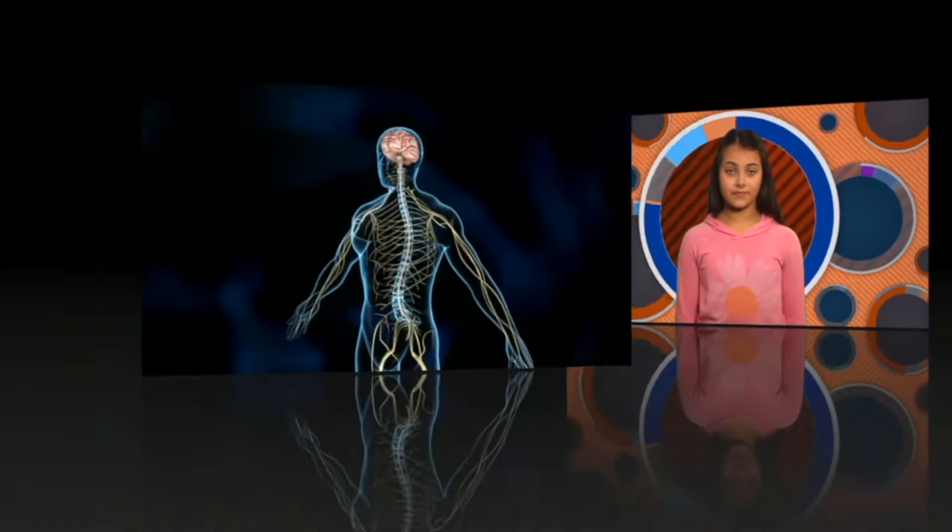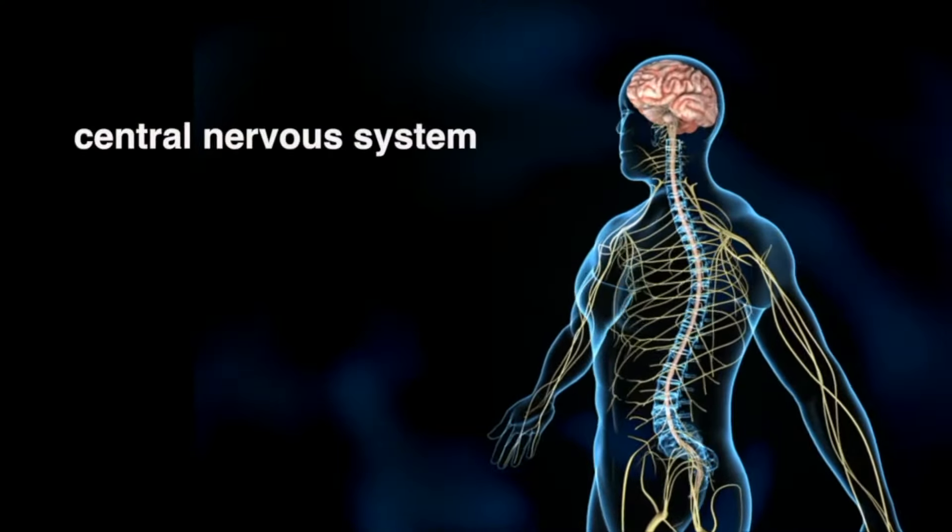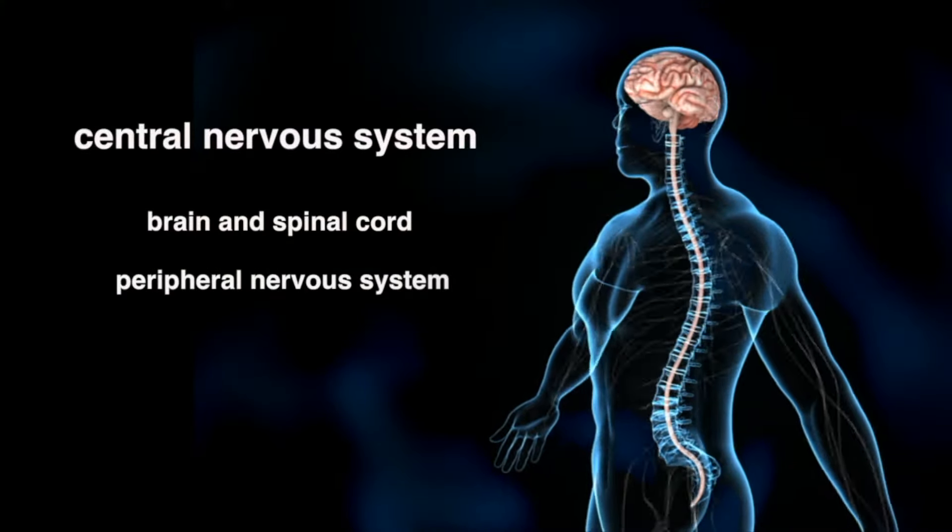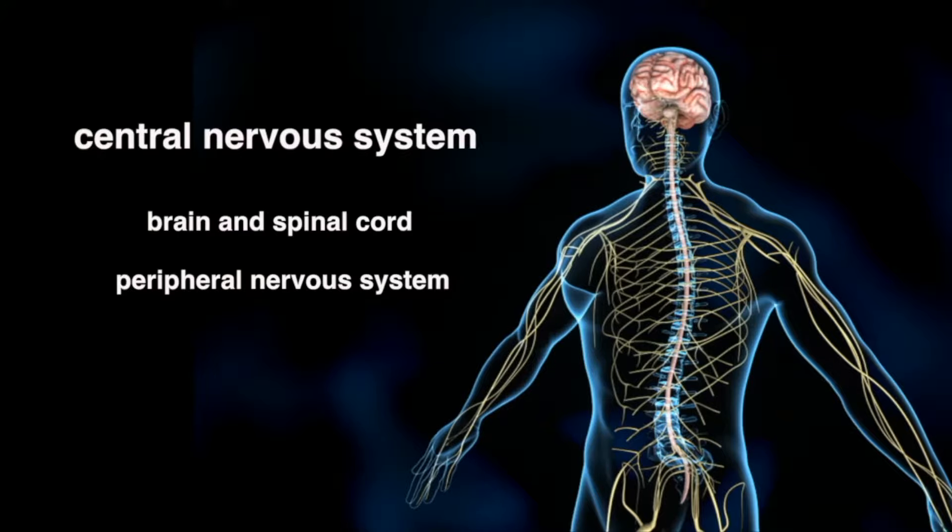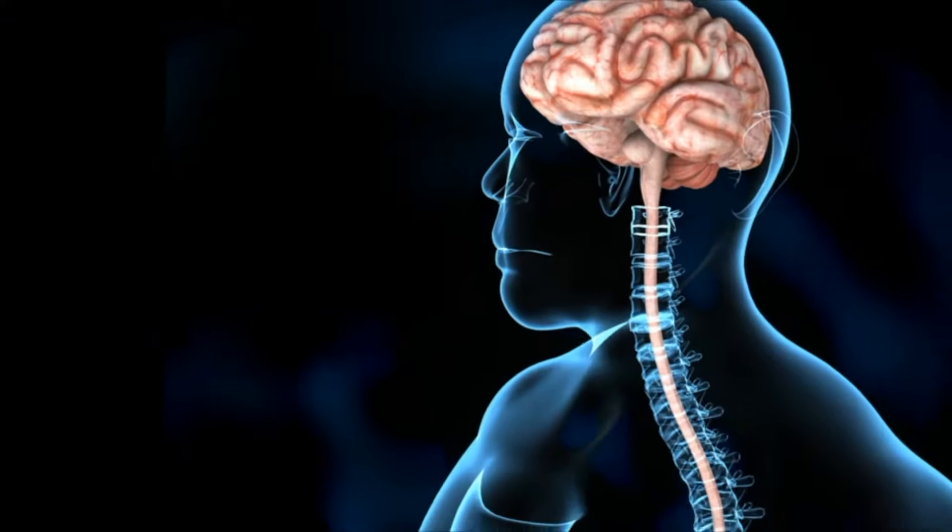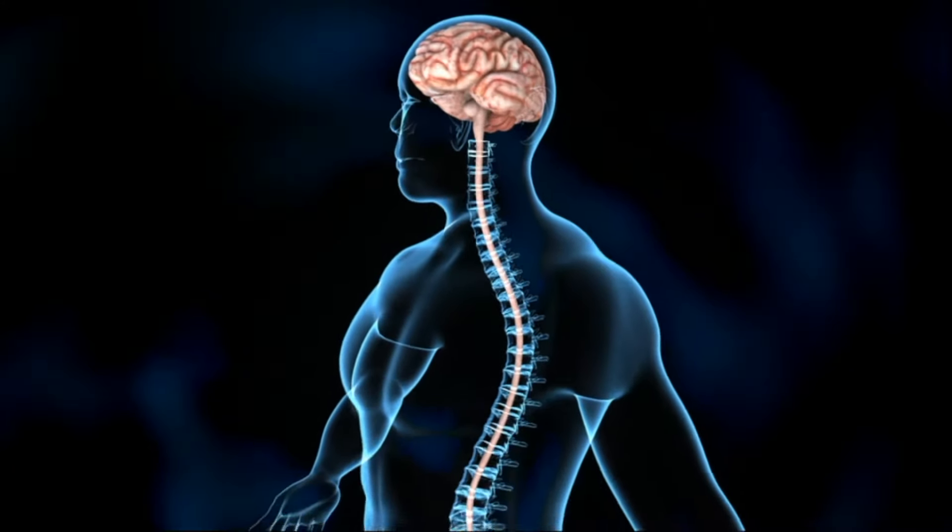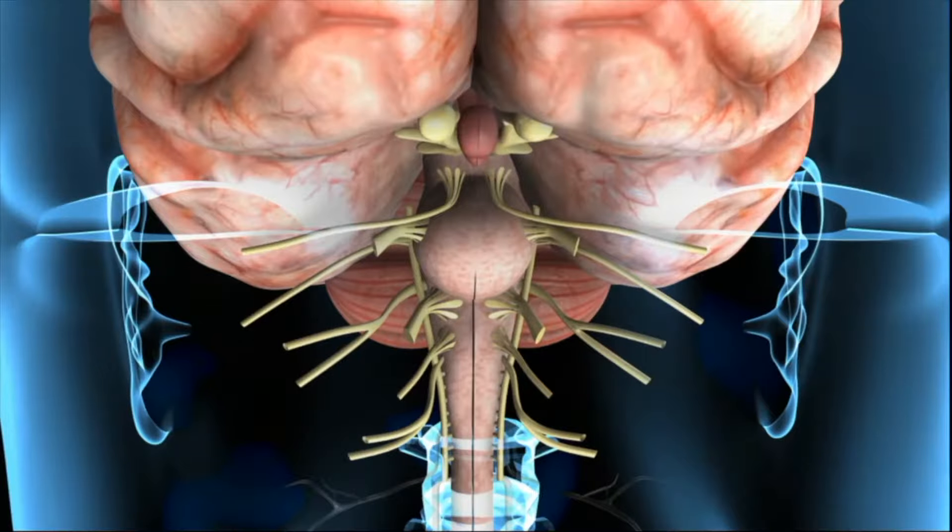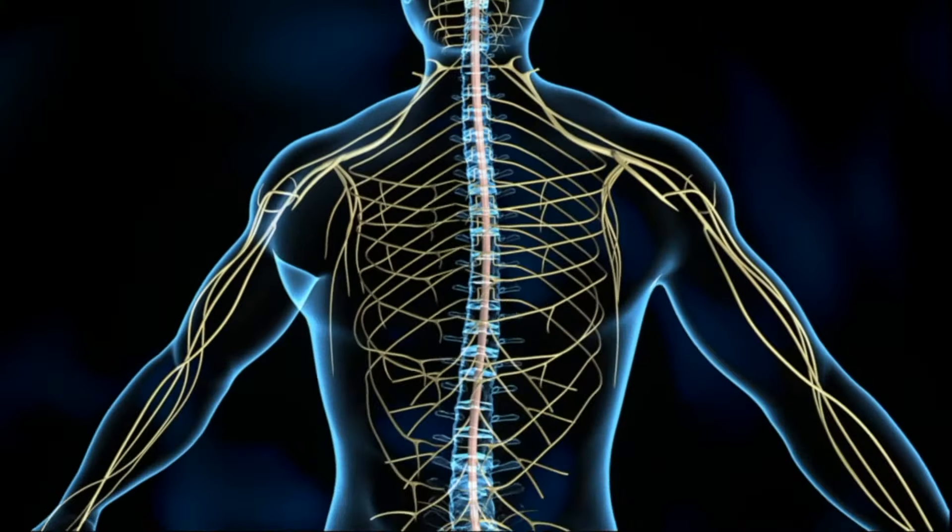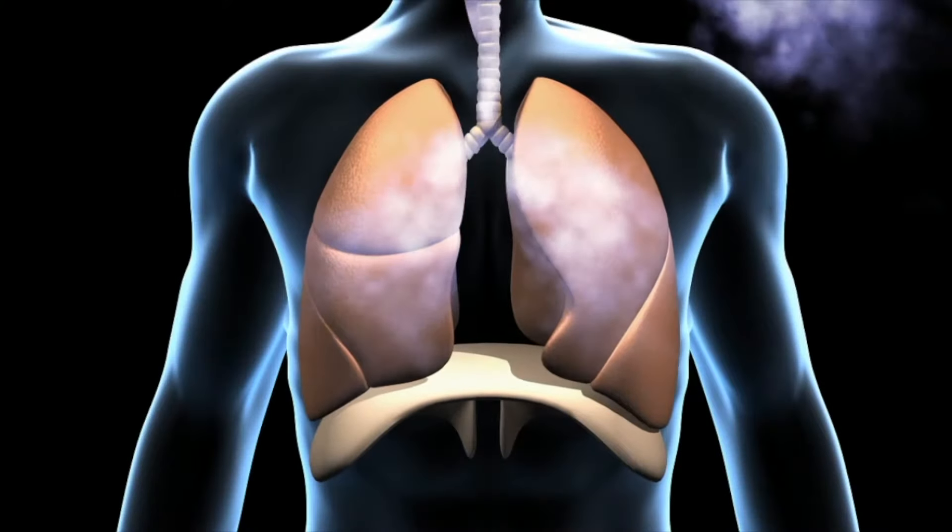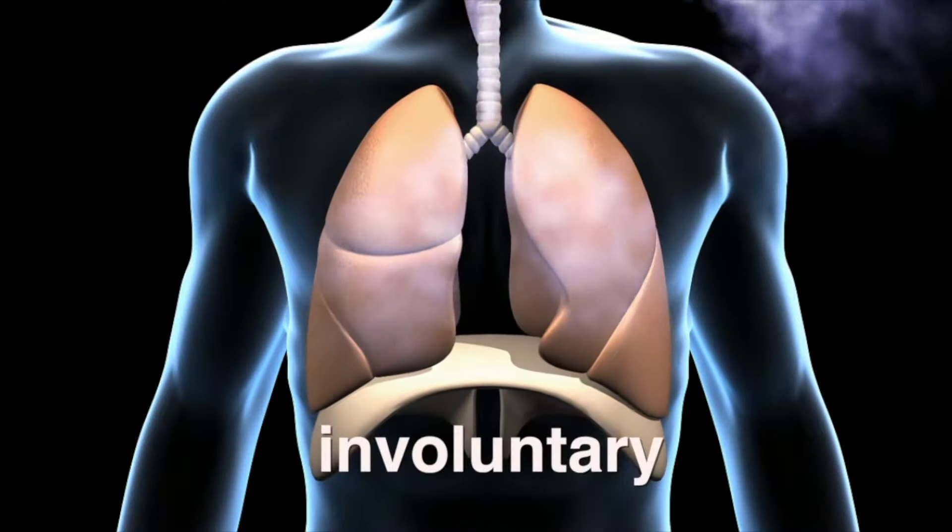Your nervous system is divided into two parts. The central nervous system includes your brain and spinal cord, and the peripheral nervous system includes all the nerves that connect every part of your body to the central nervous system. The central nervous system is your body's control center. The brain, which is located in your skull, controls most functions in the body. Many of these functions are automatic, like breathing. These are referred to as involuntary.